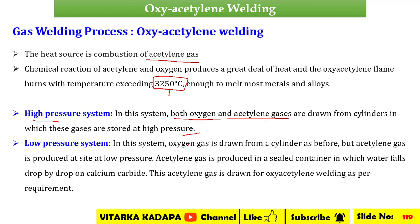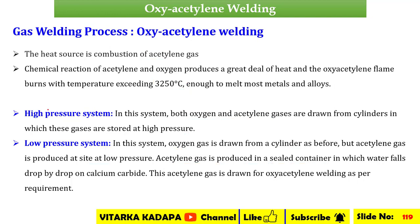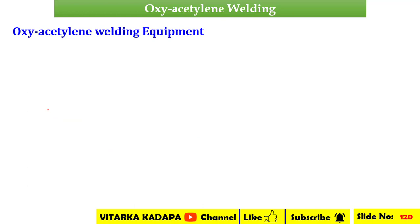In the low pressure system, oxygen gas is drawn from a cylinder as before, but acetylene is produced at low pressure. Acetylene gas is produced in a sealed container in which water falls drop by drop onto calcium carbide. This acetylene gas is drawn as per the requirement. These are the two classifications: high pressure and low pressure systems.